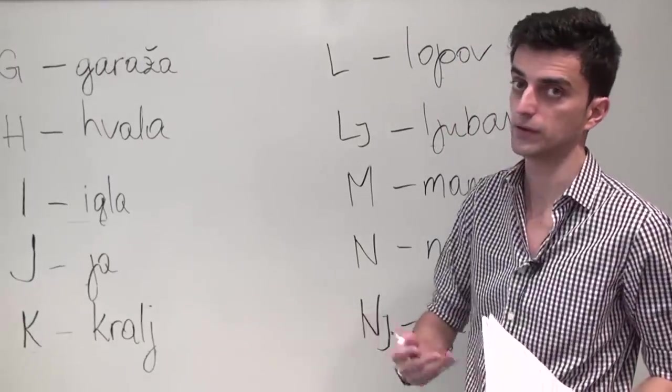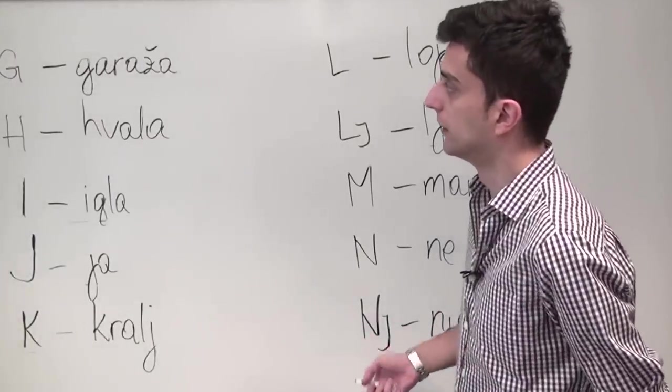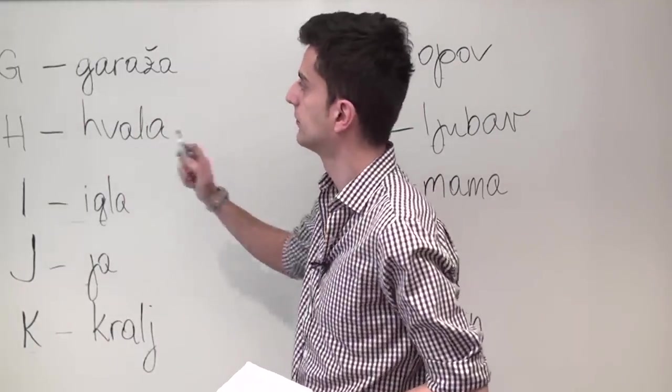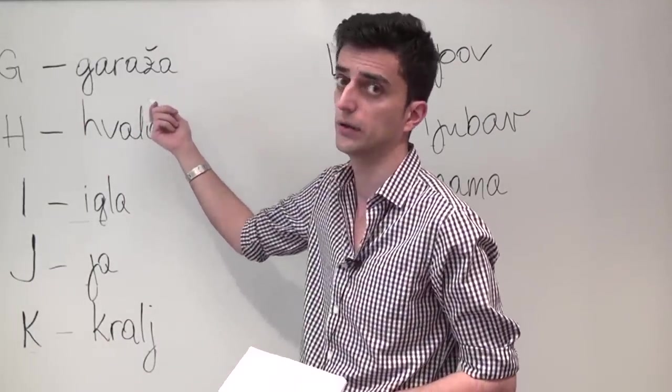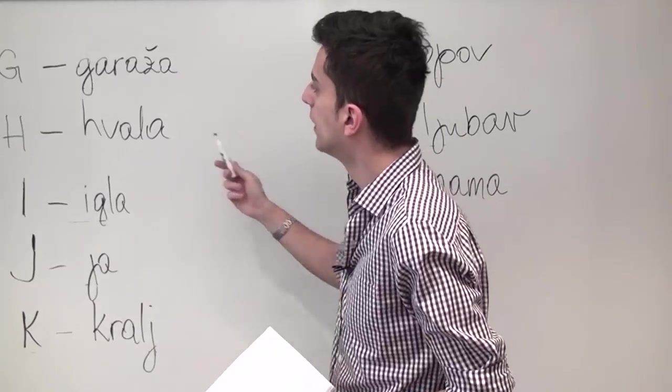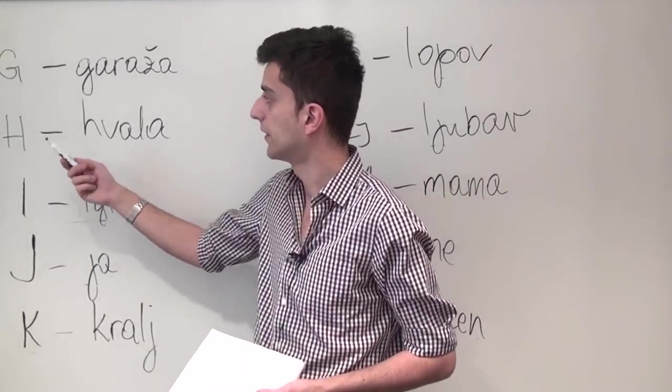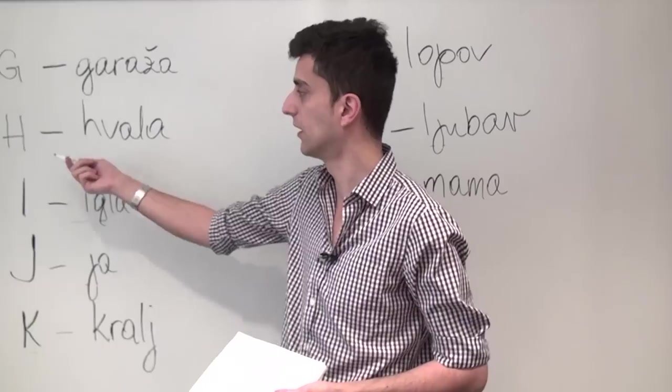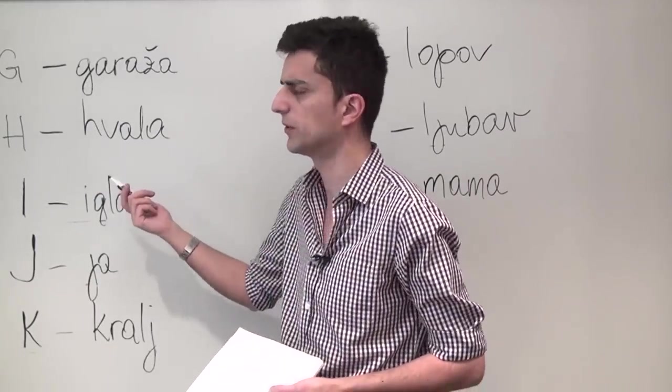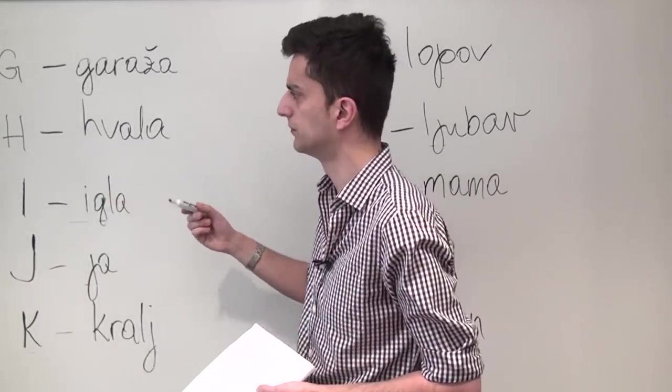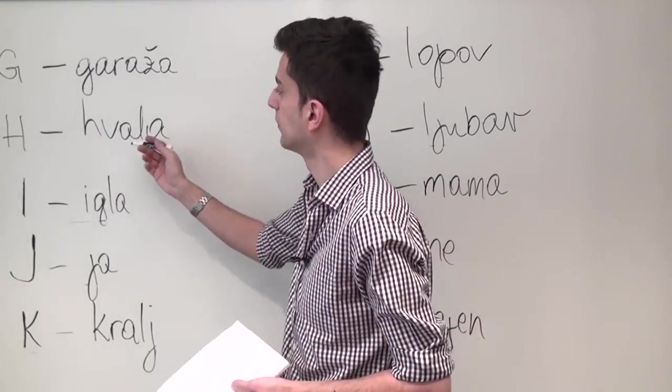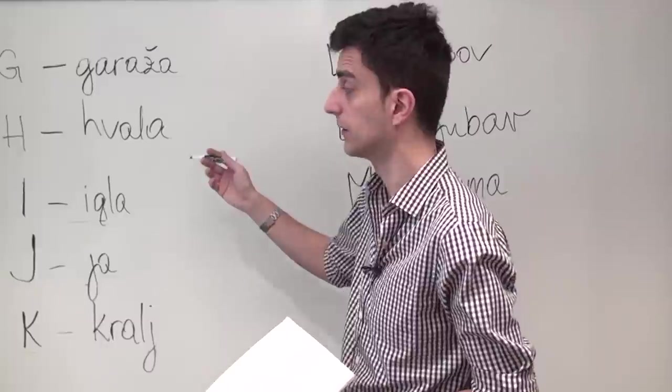So letters from 11 to 20 are G in English or in BCS G, and a word that starts with G is garaža meaning garage obviously. The letter H, or in BCS H, is not as commonly heard in English, so pay attention to it. It can be heard in the word hvala meaning thanks.